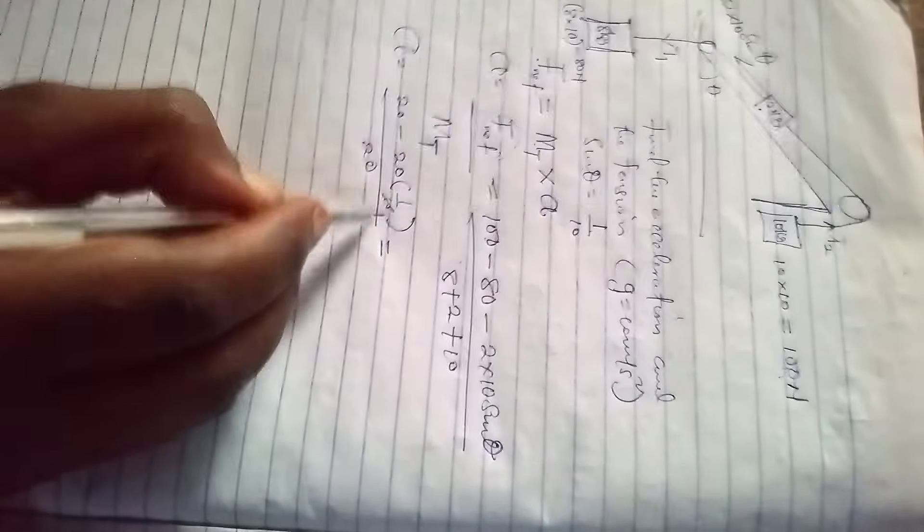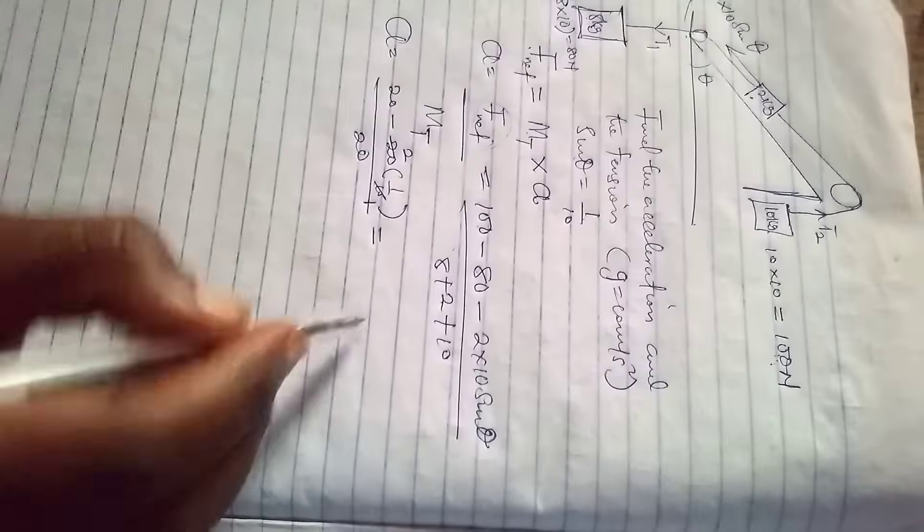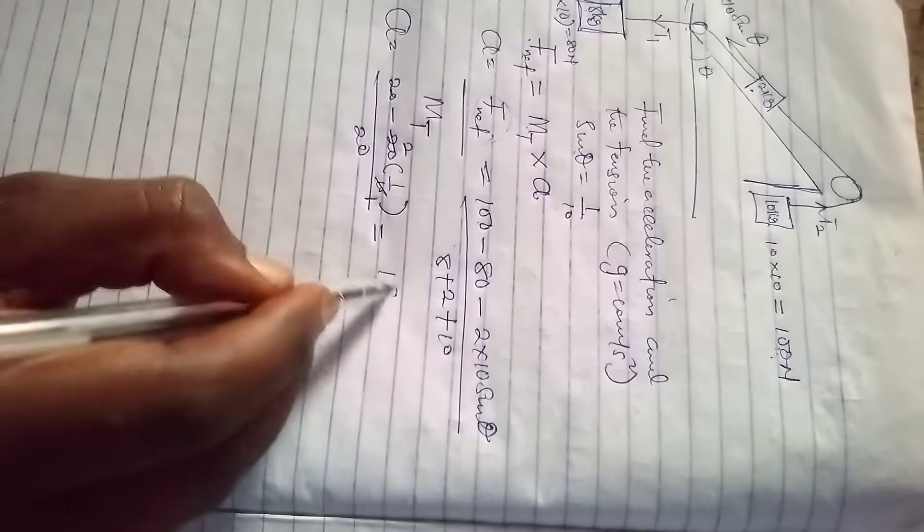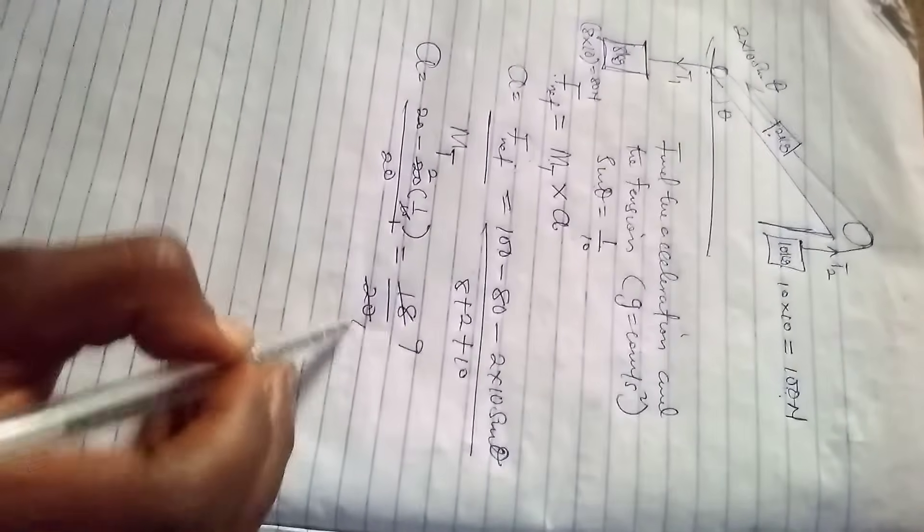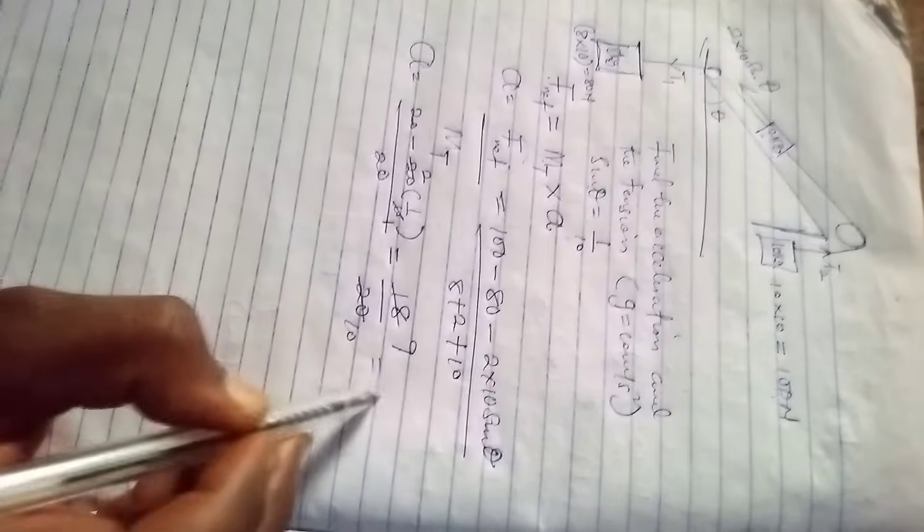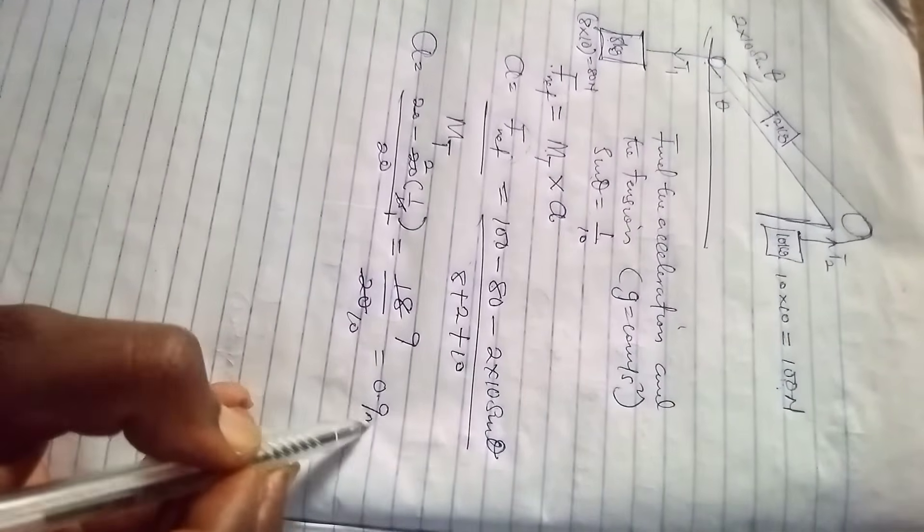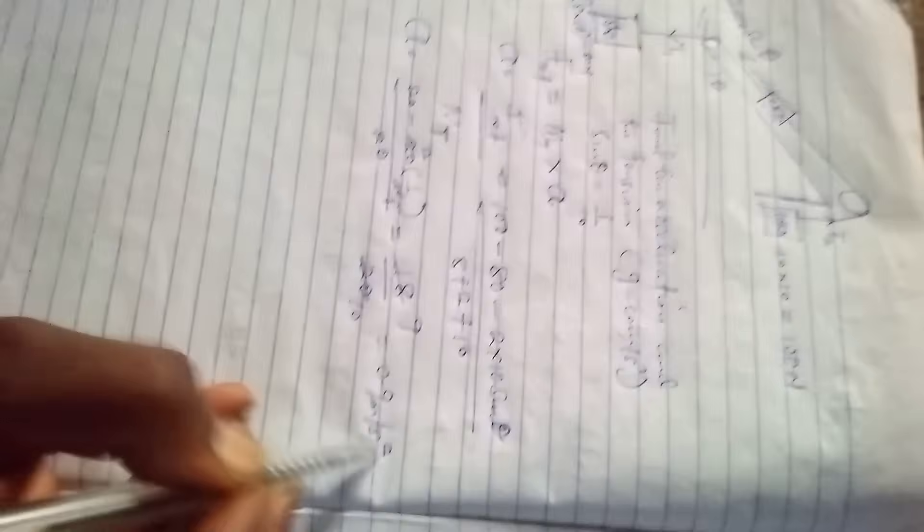So our acceleration becomes 100 minus 80 is 20, minus 20 sine theta. Our sine theta is 1 over 10. So 20 minus 2, that is 18 over 20. 9 over 10 will give you 0.9 meter per second square. So that is our acceleration.